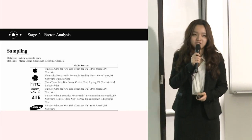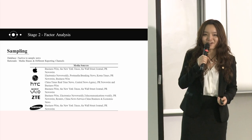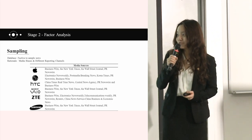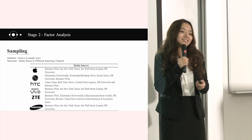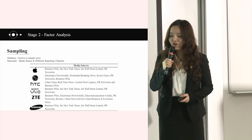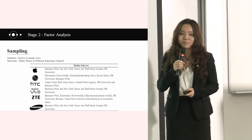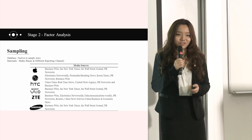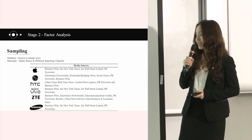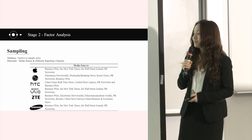We used Factiva to sample our news. During our research, we found it very interesting that media has bias when reporting company news, and also the six companies have different reporting channels. In order to reach an objective estimate, we took samples from both local sources and international reporting sources. The media sources for each company are displayed here.